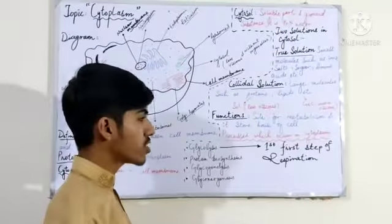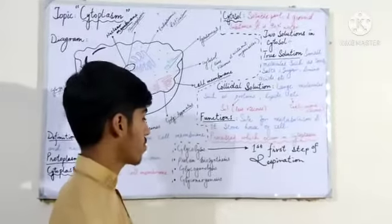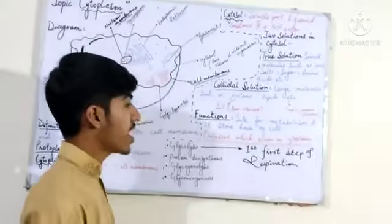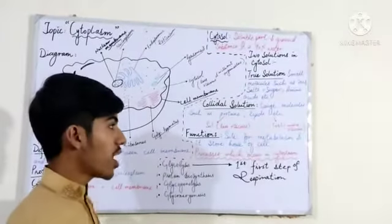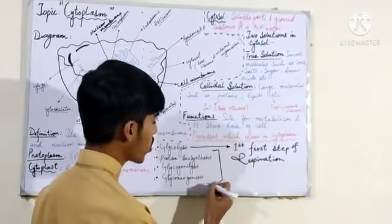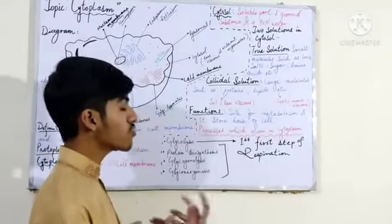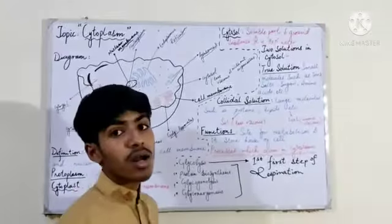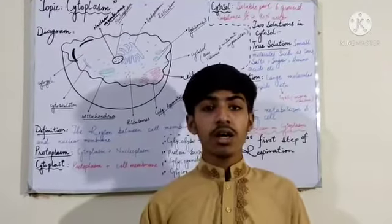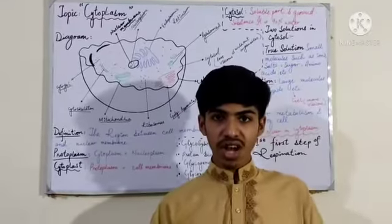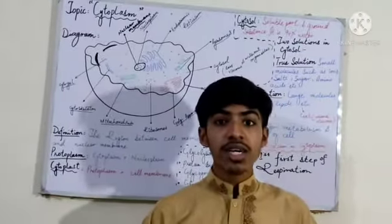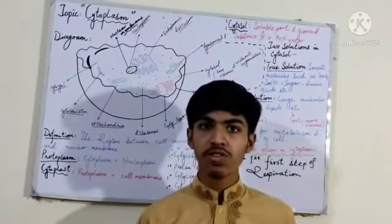Then there is glycogenesis, in which the glycogen molecule is broken and glucose is produced. Then there is gluconeogenesis, in which proteins or lipids are converted into glucose. These are some of the processes occurring in cytoplasm. Although these are not in the book, I tried to give you some extra information, because we are at the FSc level. In FSc exams, you are not limited to just the book — you can write some extra information to make your presentation better, so that the examiner becomes happy and you get better marks.